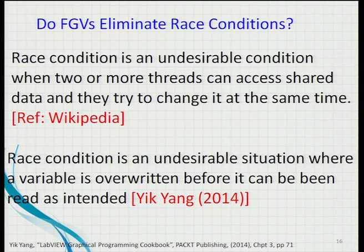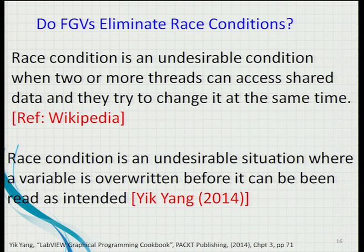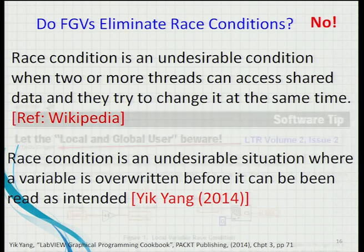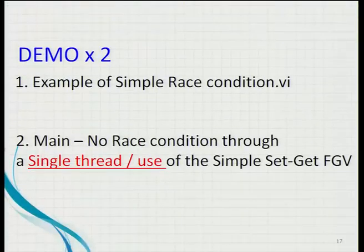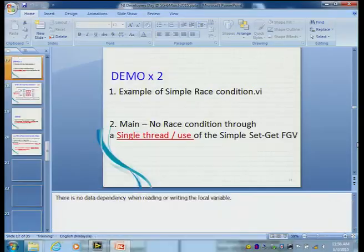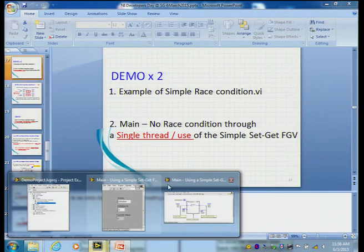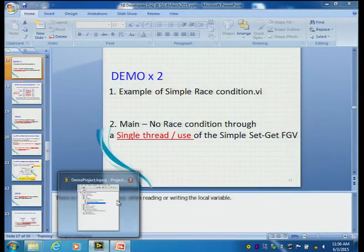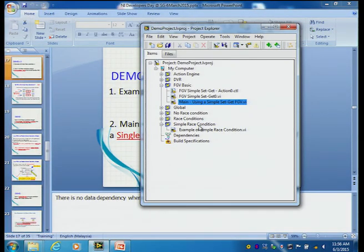But do FGVs actually eliminate race condition? First, what is race condition? One definition I like: it's an undesirable condition whereby the value of a local variable is being overwritten before it is being read. It is a very undesirable situation. Let me show you a simple demo to illustrate race condition.